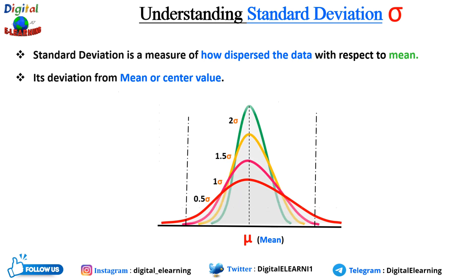In this case, we are calculating multiple standard deviations: 0.5 standard deviation, 1 standard deviation, 1.5 and 2 standard deviation. So, if the standard deviation is small, it means that most of the values are close to the mean. And if it is large, it means that the values are more spread out. Like in this case, B has the highest standard deviation, while A has the lower standard deviation.